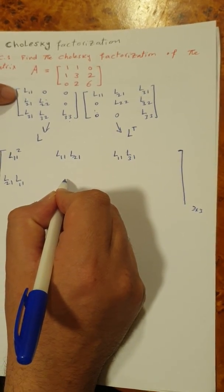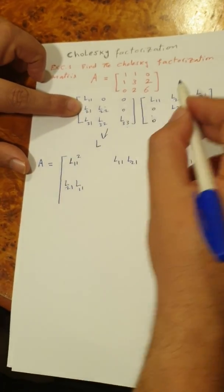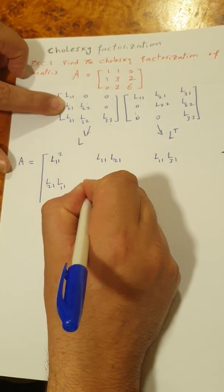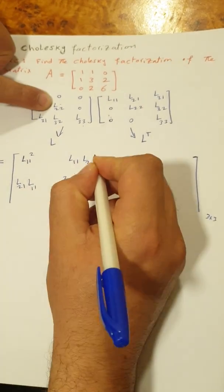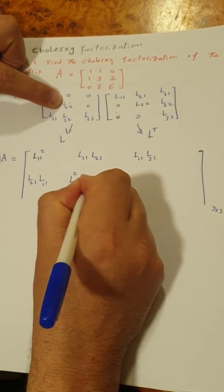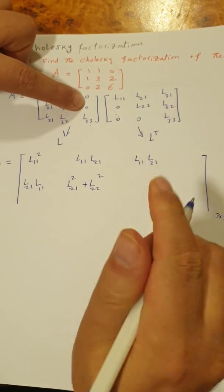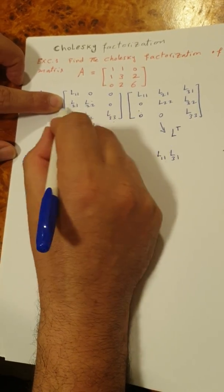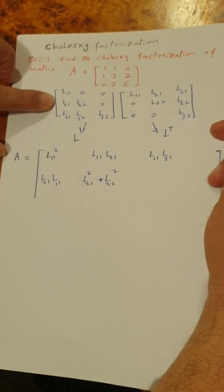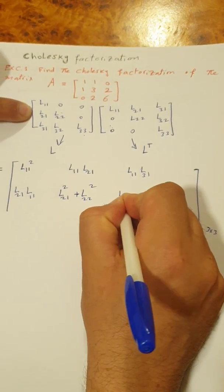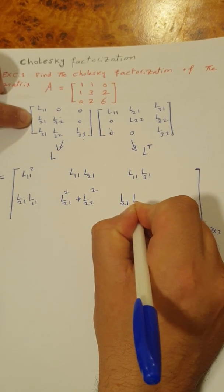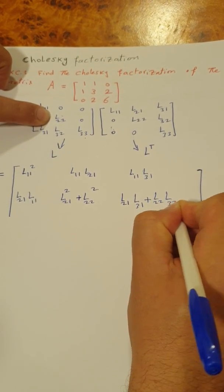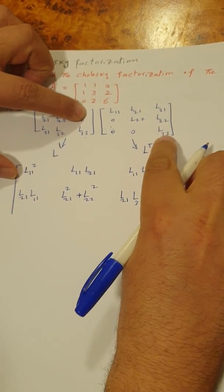To find the diagonal element of the second row, we multiply the second row by the second column: L21 squared plus L22 squared. To find the off-diagonal element, we multiply the second row by the third column: L21 times L31 plus L22 times L32 plus zero times L33 equals zero.